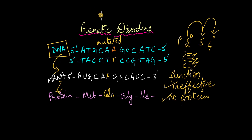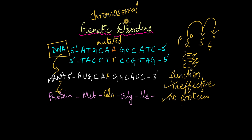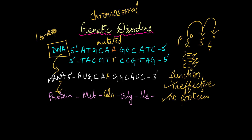There is another type of disorder known as chromosomal disorder, which we will talk about in another video. This is when the structure of the chromosome itself has changed or the number of chromosomes has changed. But in this video, we are going to focus on genetic disorders where there is a change in the DNA sequence of one or a couple of associated genes.